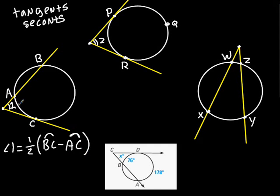For this first one, angle 1 is going to end up equaling one-half BC arc minus the AC arc. Notice how it's one-half this BC arc minus the AC arc.